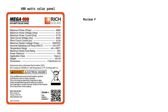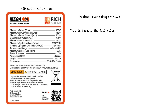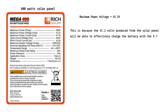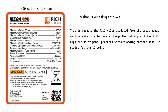Looking at the 400-watt solar panel, which produces a maximum power voltage of 41.2 volts, there will be no problem charging a 12-volt or 24-volt battery. This is because the 41.2 volts will be able to effectively charge the battery with the 9.71 amps the solar panel produces, without adding another panel in series for 12-volt and 24-volt configurations.